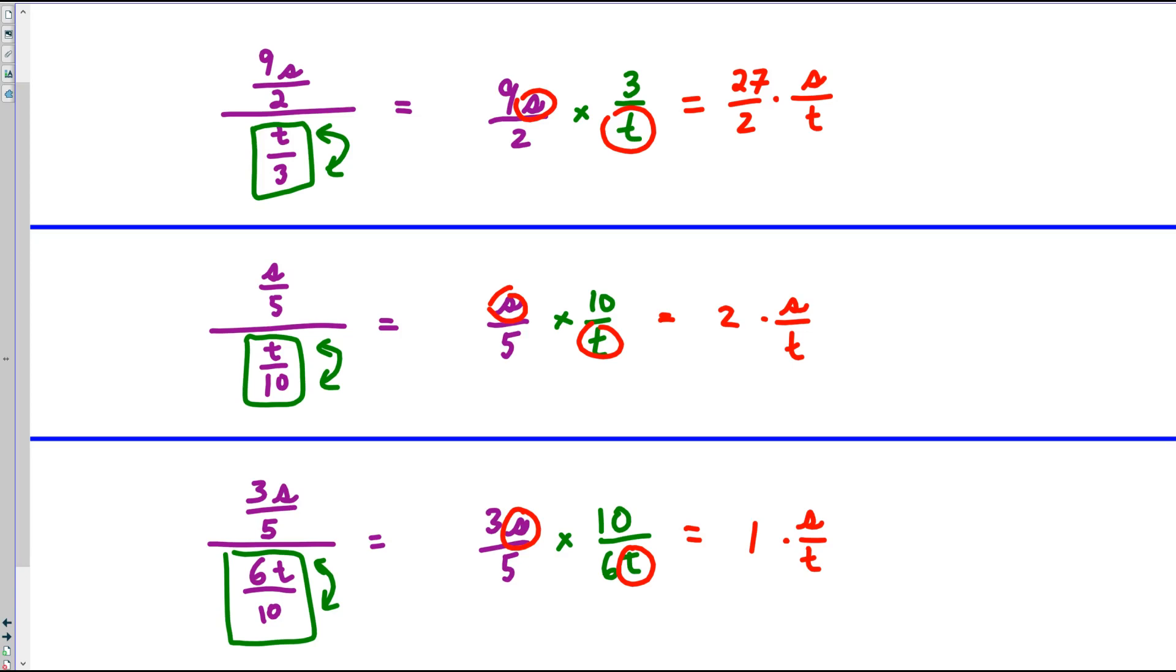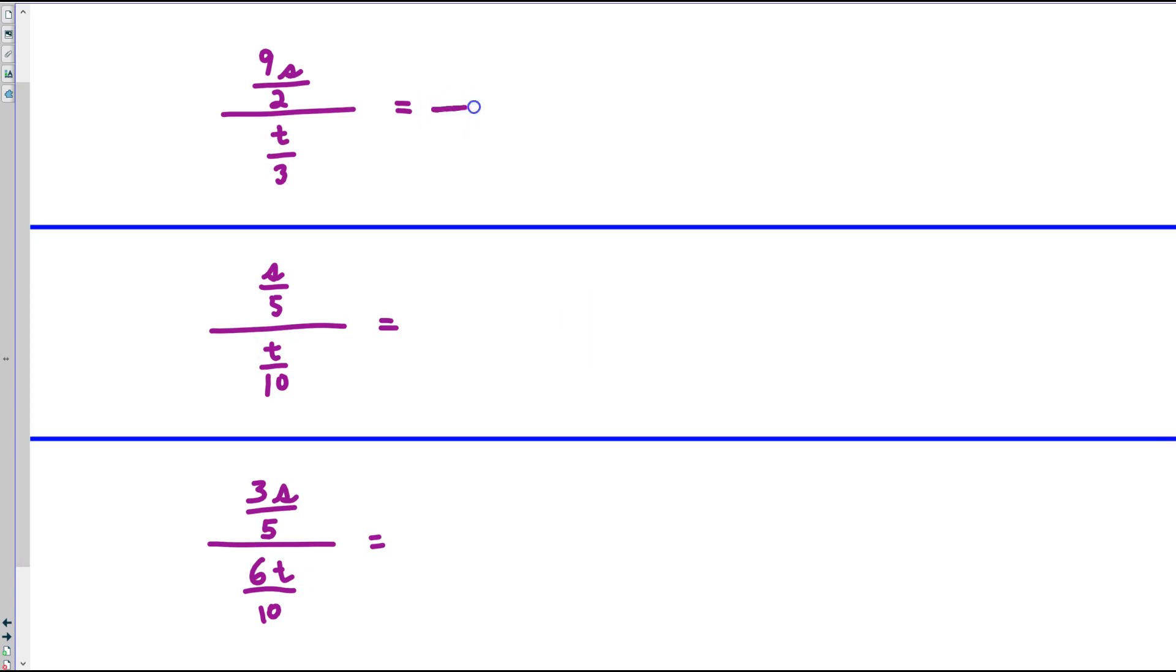Now, there is another way to do this, and it's a nice visual way that I like when I'm working through these problems. I'm going to draw a single fraction bar. When I flip this fraction down below, the t becomes part of the denominator, and it joins the 2.